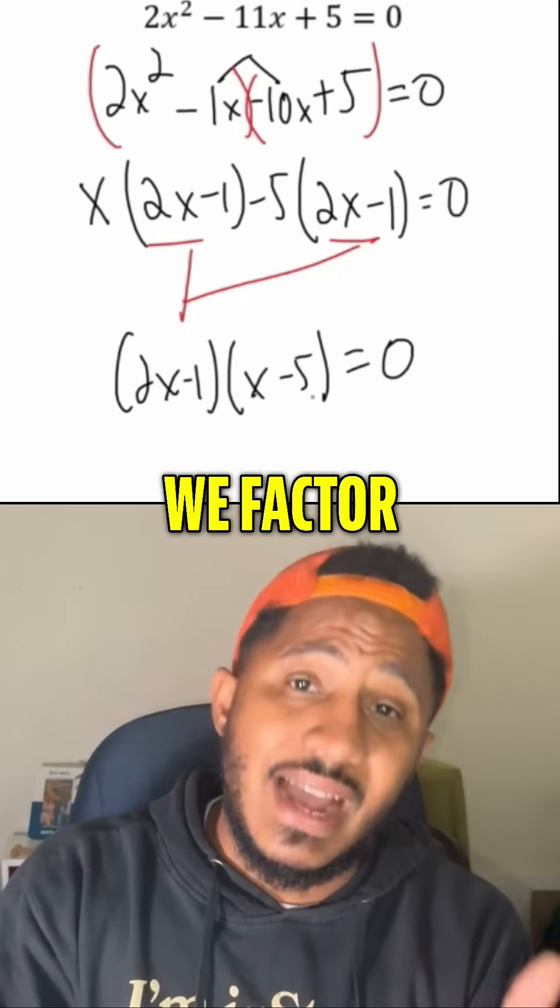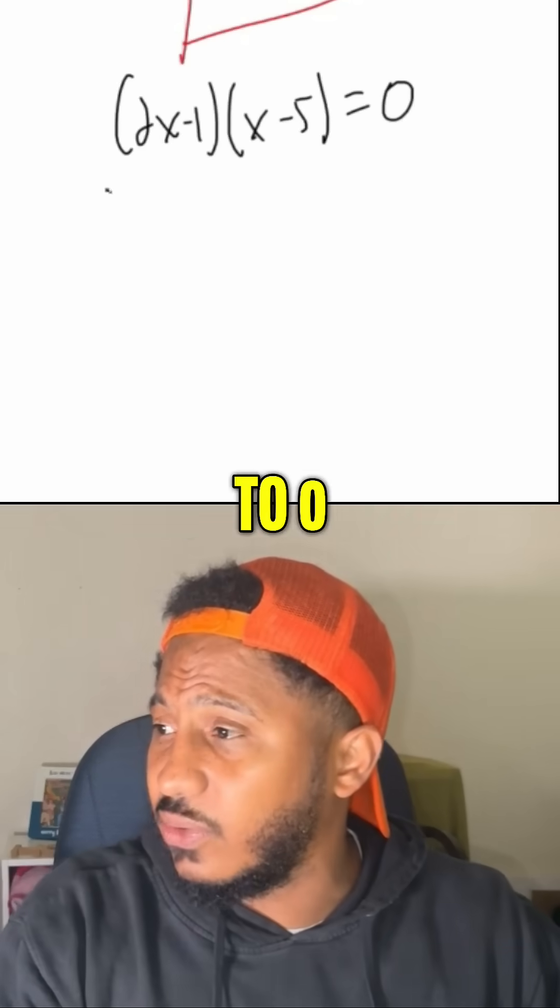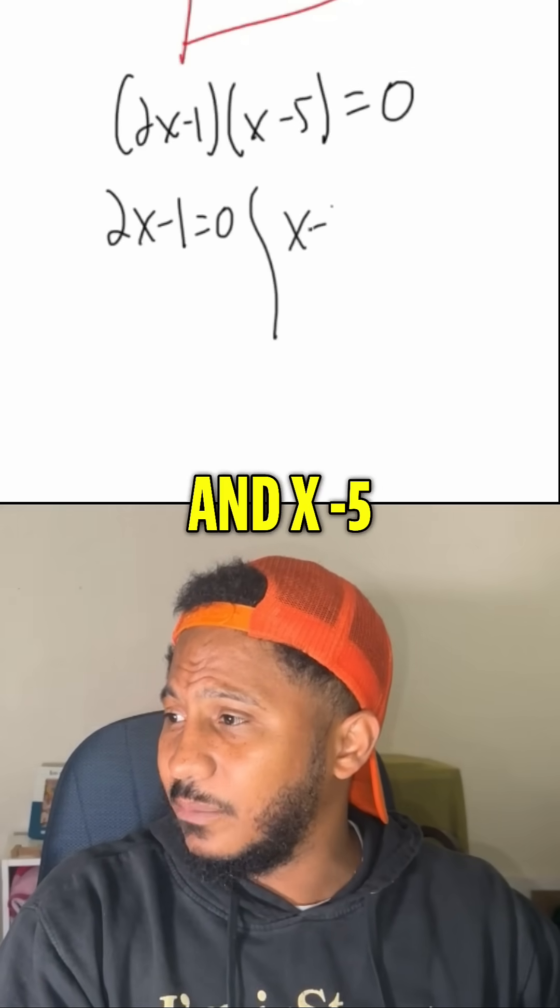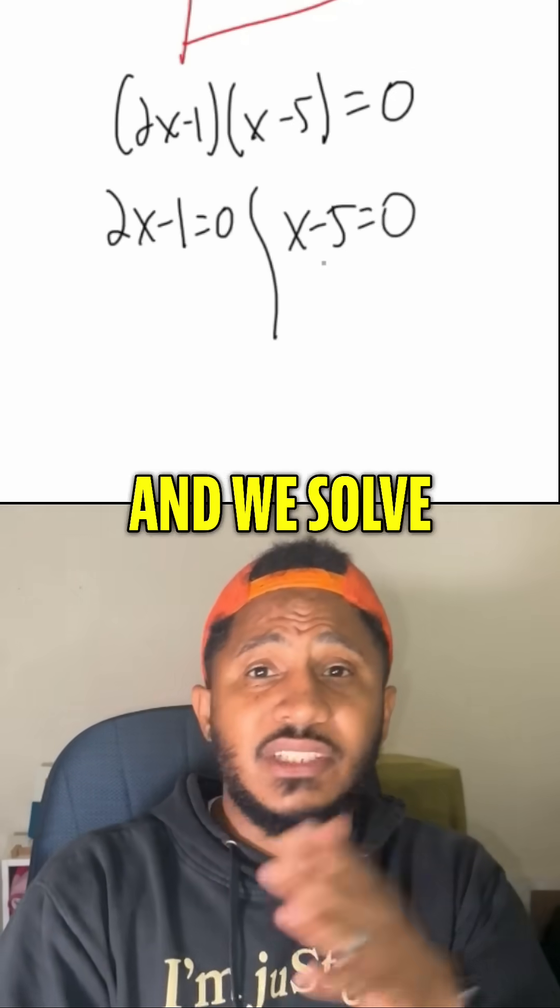So we get 0 on one side. We factor the other side. Set each factor equal to 0. So 2x minus 1 equals 0, and x minus 5 equals 0. And we solve each of those separately.